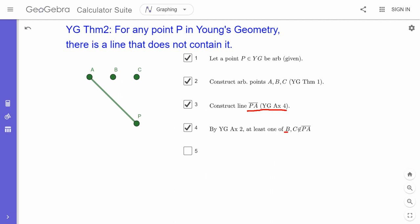And we're saying that, hey, either one of these two elements is actually not in there, right? Why? Well, by Young's geometry axiom 2.